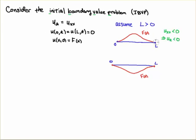So in this case where our initial profile is concave down, the temperature profile is concave down. So that means that the second derivative is less than zero if it's concave down.